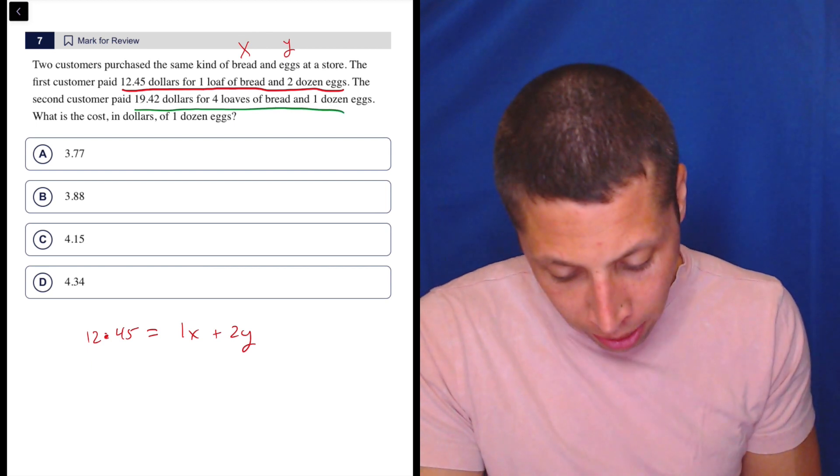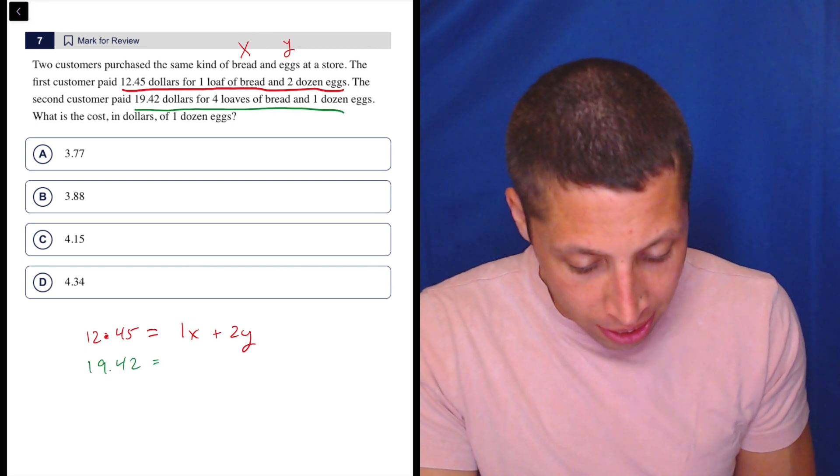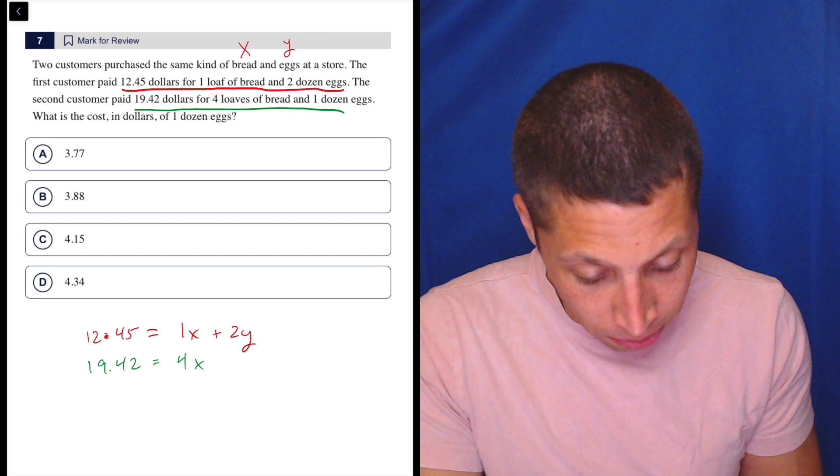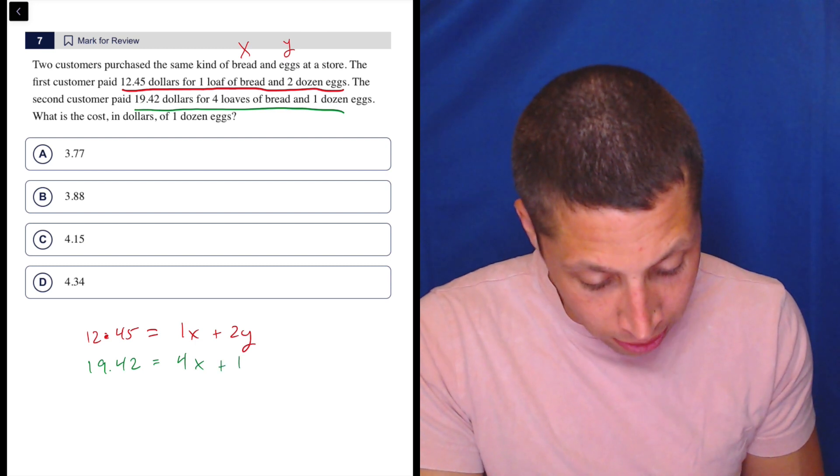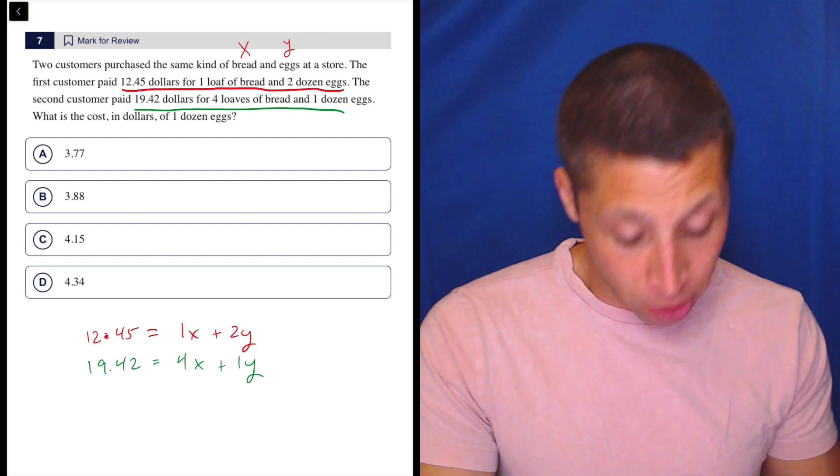Then we have this other equation here, 19.42. So let's do that. 19.42 is for four loaves of bread and one dozen eggs. Now I've got my equations.